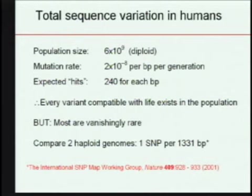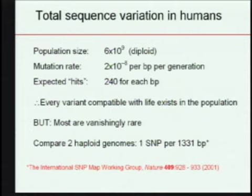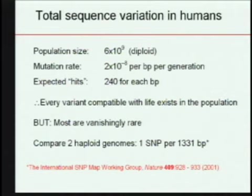How much variation is there in humans? People talk about 10 million SNPs, but if you think about how much variation really exists — taking into account population size, mutation rate, and the number of hits — actually every base has been hit or mutated 240 times in the last few generations. That means every variant compatible with life exists if we were to sequence everybody on the planet, but most are vanishingly rare, found in only a couple of individuals, not common among human populations.